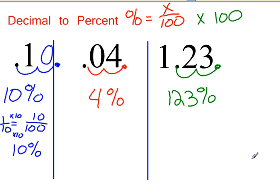4 hundredths would be 4 out of 100. 4 out of 100 is equal to 4 percent.